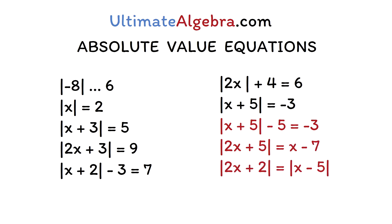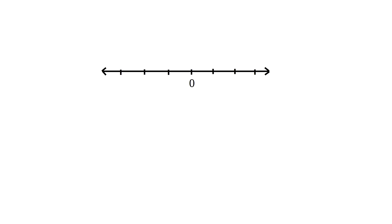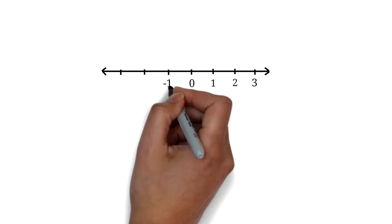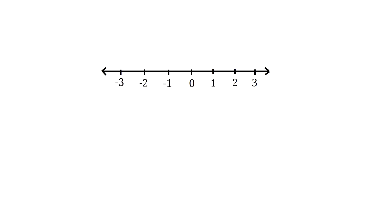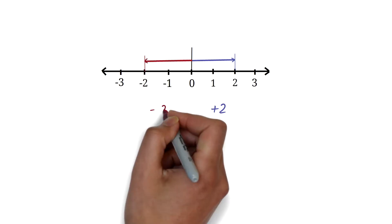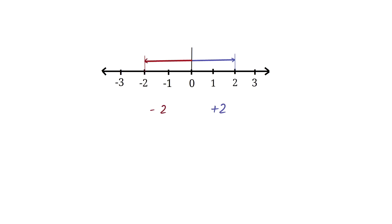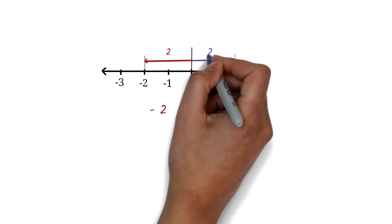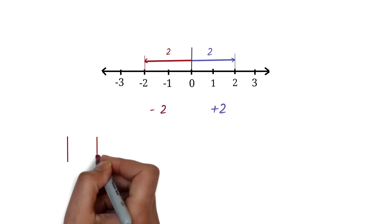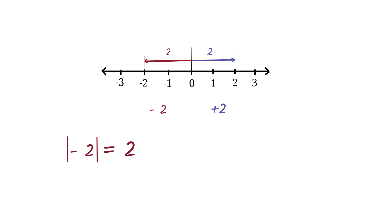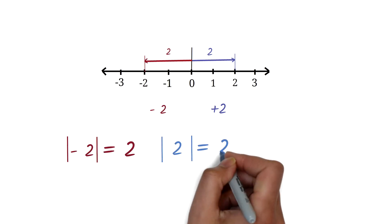Before we solve the questions, let's look at what absolute values are. Let's draw a number line. We have 1, 2, 3, and so on, and negative 1, negative 2, negative 3, and so on. The idea of absolute value is that it doesn't matter if you moved 2 to the right to get positive 2 or you moved 2 to the left to get negative 2. Absolute value is only concerned about the fact that you moved 2. So the absolute value of negative 2 is 2, and also the absolute value of positive 2 is 2.